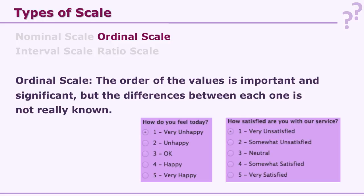Ordinal scale — ordinal means there is an order, there is a sequence. The order of the values is important and significant, but the difference between each one is not really known. For example, 'How do you feel today?' — very happy, happy, okay, unhappy, very unhappy. We give numbers 1 to 5, but do we really know that the distance between 'okay' and 'happy' is the same as between 'okay' and 'unhappy'? No, we cannot say that. There is a sequence, but the distance between the levels is not known.